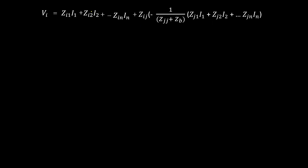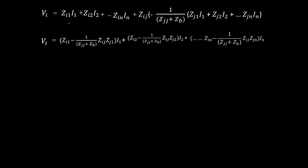Now we have to simplify this equation. We separate the I1 terms, the I2 terms, and so on through the IK terms. The first term is ZI1 into I1, and multiplied by minus 1 divided by ZJJ plus ZB into ZIJ into ZJ1. So the first term gives ZI1 minus 1 divided by ZJJ plus ZB, times ZIJ times ZJ1, times I1. Similarly, the second term is ZI2 minus 1 divided by ZJJ plus ZB into ZIJ into ZJ2, and the same pattern continues for the remaining terms.